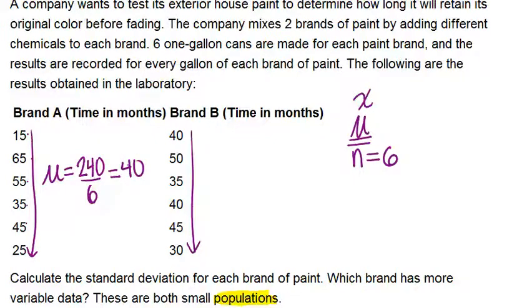Now we'll do the same thing for Brand B. Add up all six values. Again, you get a result of 240, which means that again, the mean is 40.